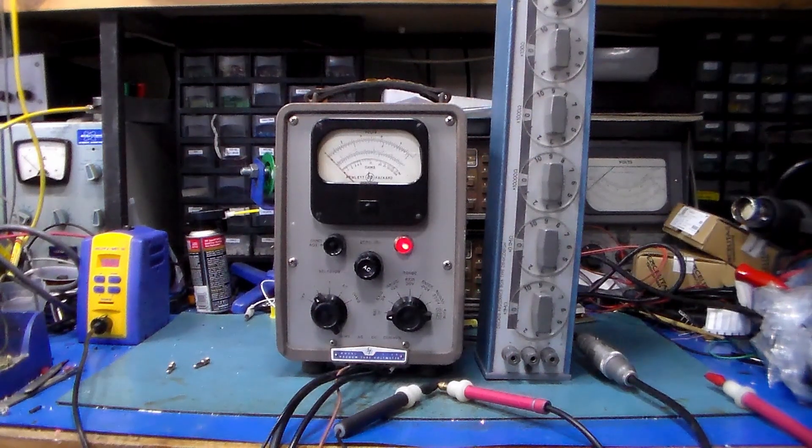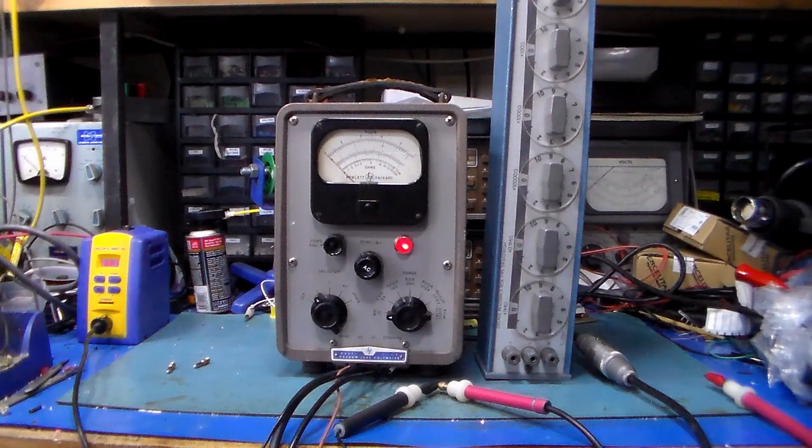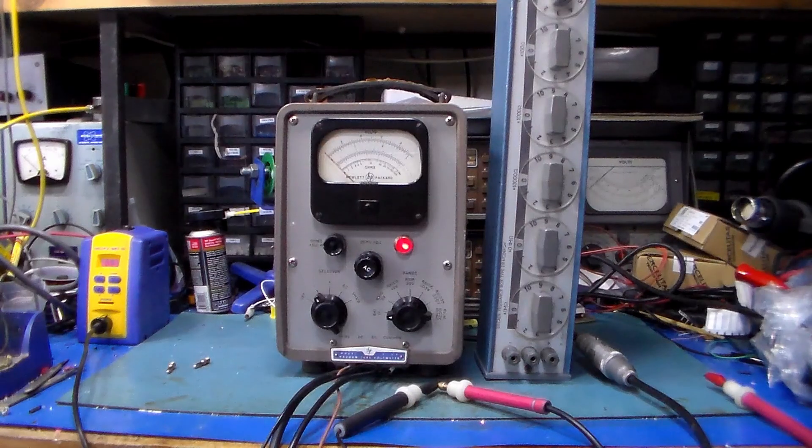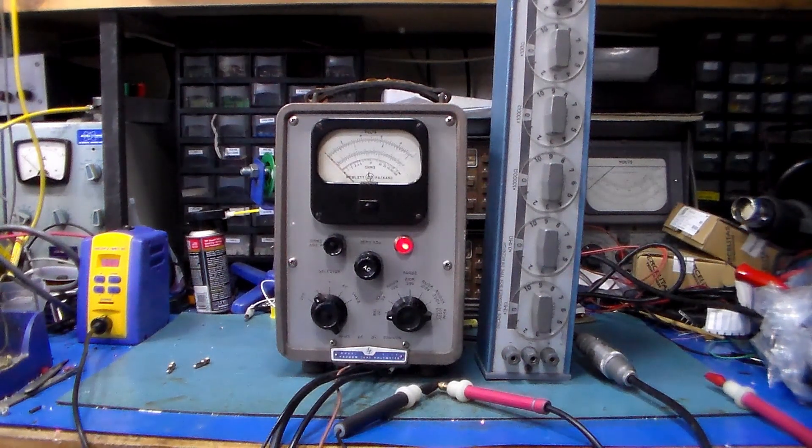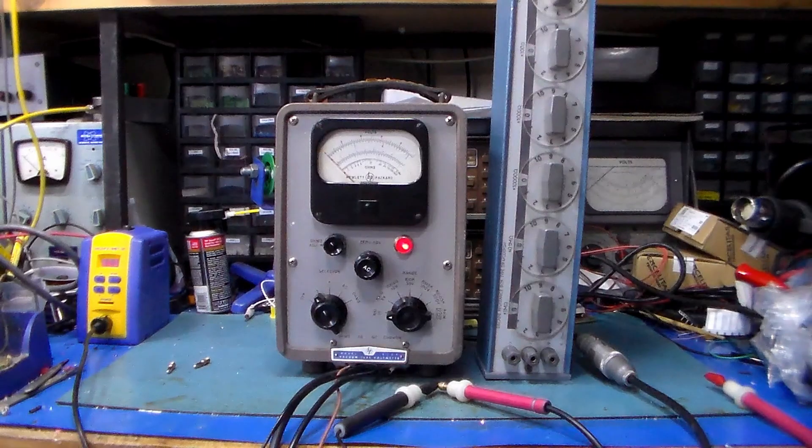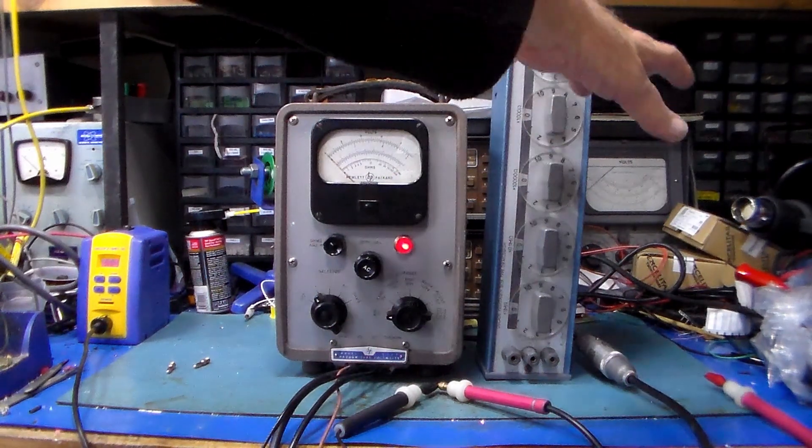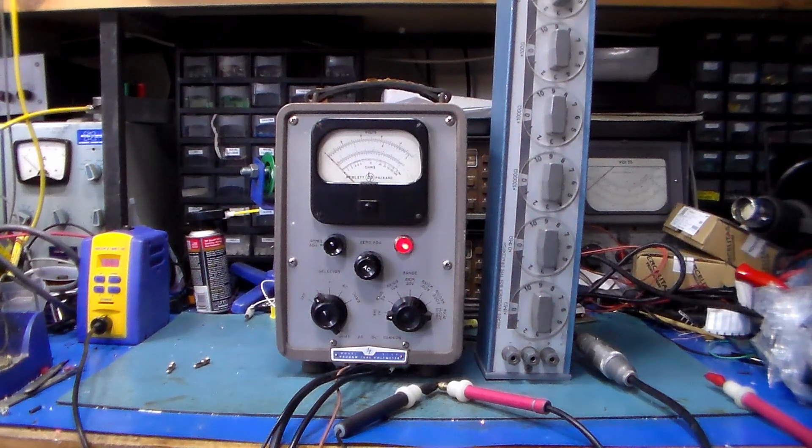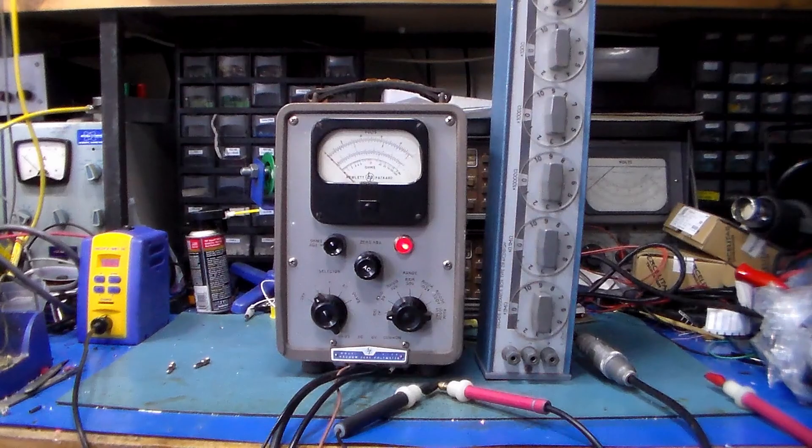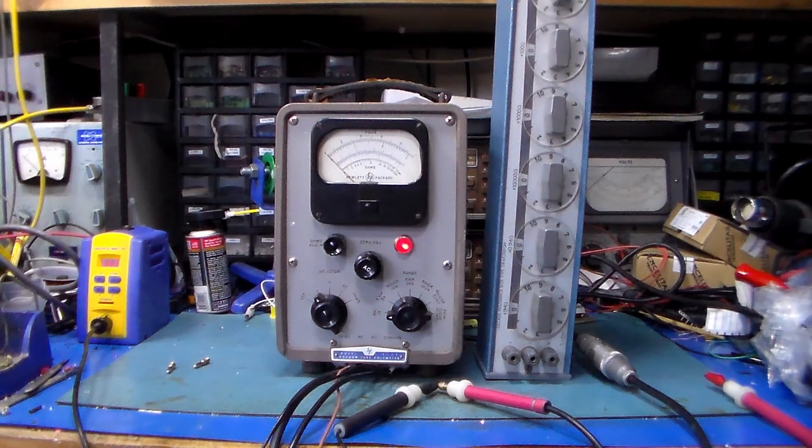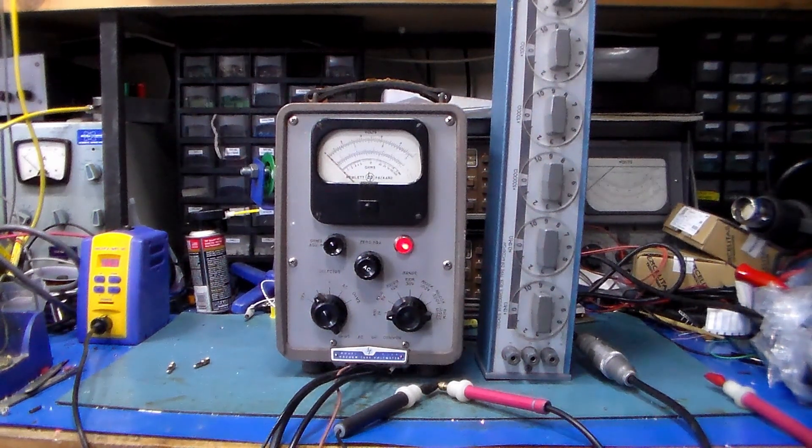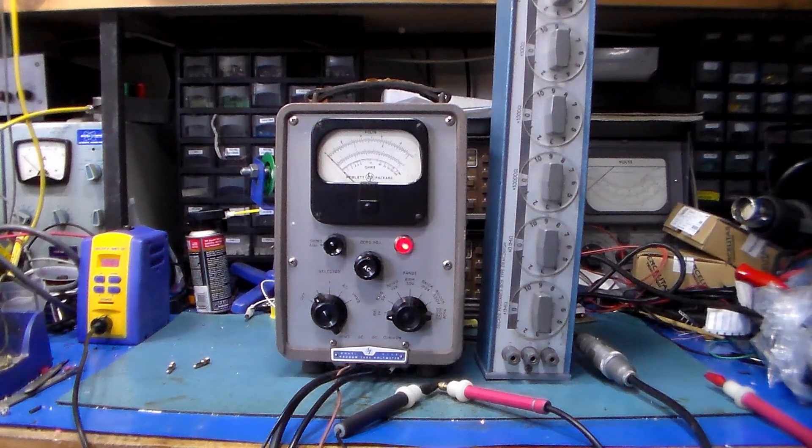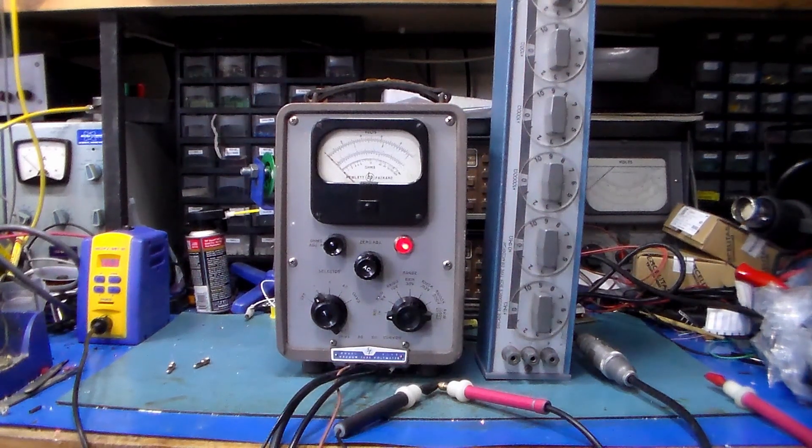Finally, I'm going to calibrate and check the resistance range or ohms range on this HP 410B vacuum tube volt meter. To do the resistance checks, we have a Danbridge decade box which gives me lowest range steps of 10 ohms and up to steps of 1 megohm.